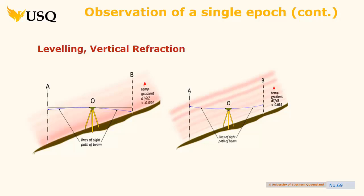Often you can level something far quicker than you can actually measure it and then reduce it all. In Comps B, I think you did a least squares adjustment of a level net.